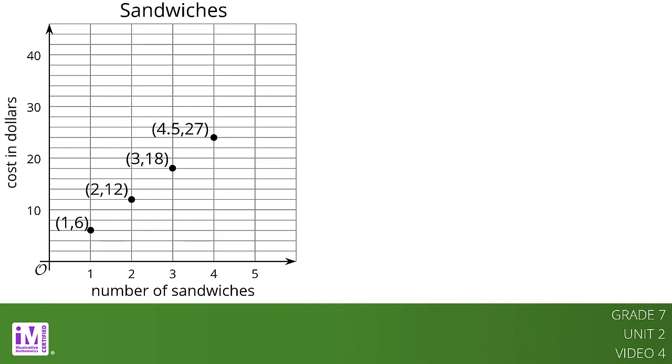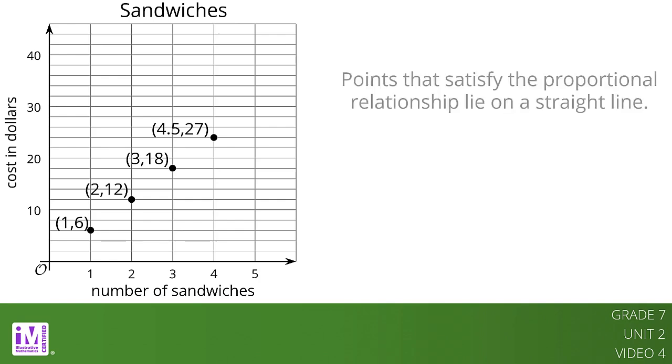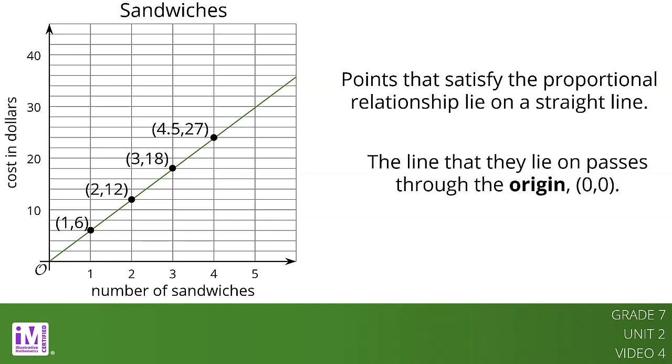Graphs that represent proportional relationships all have a few things in common. Points that satisfy the proportional relationship lie on a straight line. The line that they lie on passes through the origin, (0, 0). On this coordinate plane, the origin is marked with a cursive capital O.